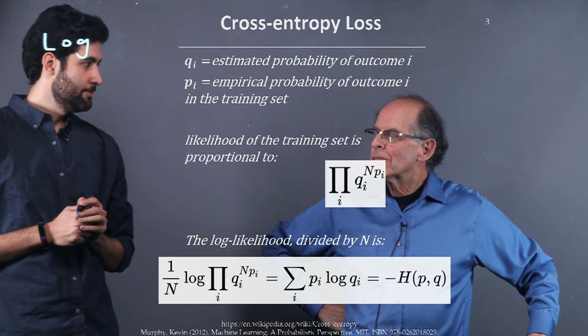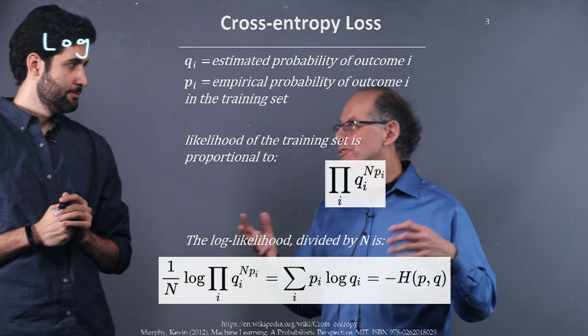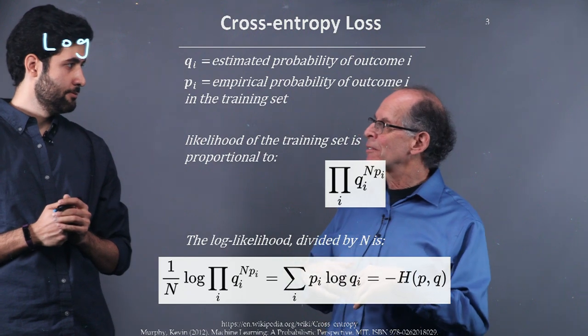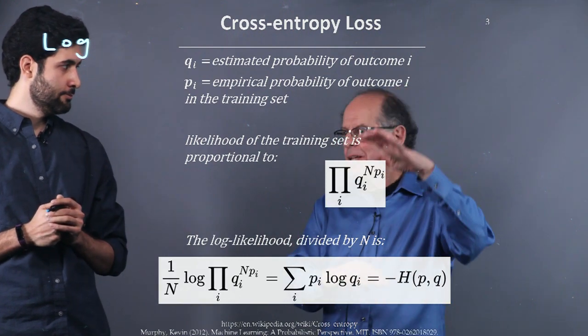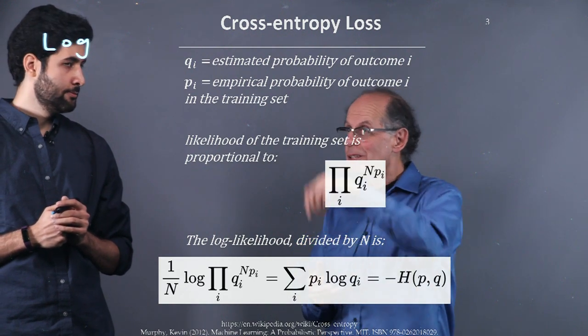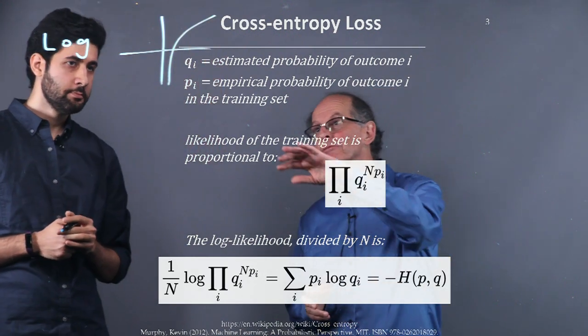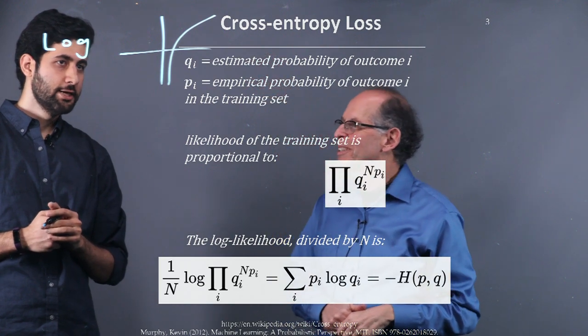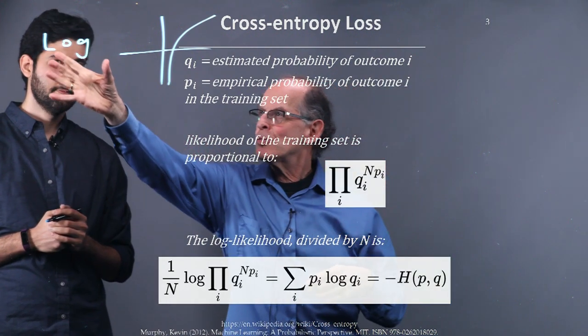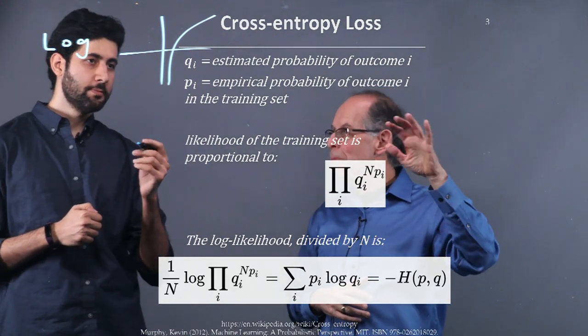When we take a log of a product, it becomes a sum. And then we take derivative of sum, which is much easier. Also, log tends to compress things. So if we have large dynamic range, we'll be able to see that dynamic range. And there's one final thing: the log function is monotonic. So what happens when we apply this transformation to this product?